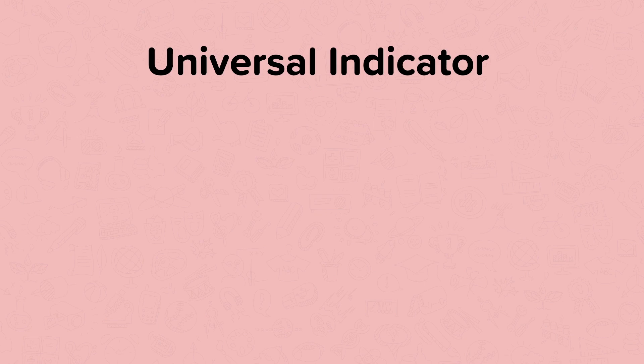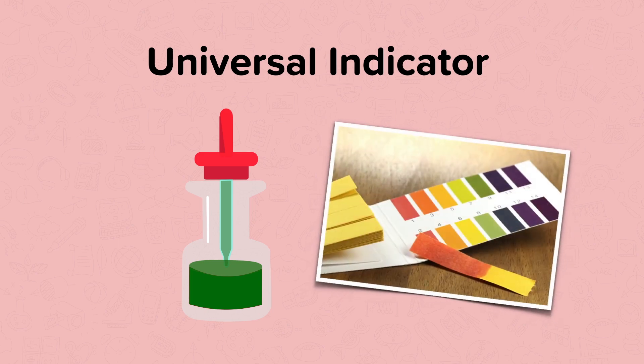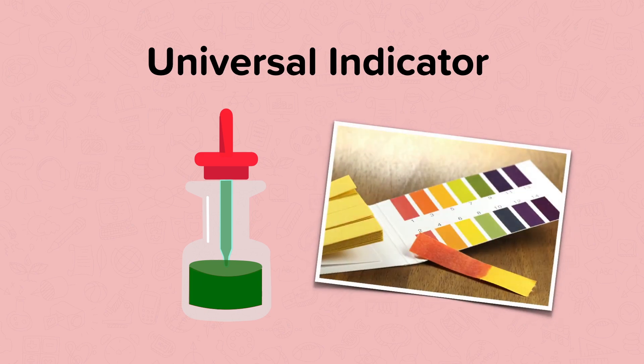Universal indicator is a wide range indicator made up of a mixture of several different indicators. It comes in the form of a solution or paper.